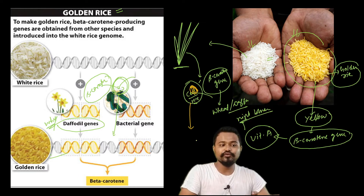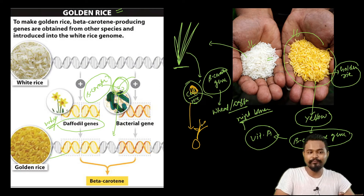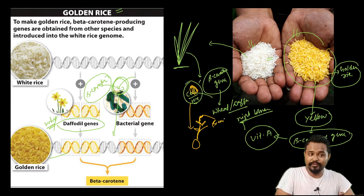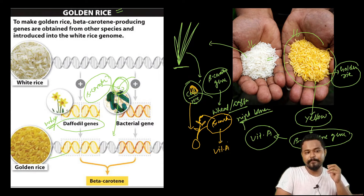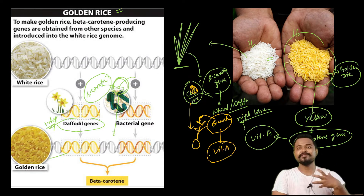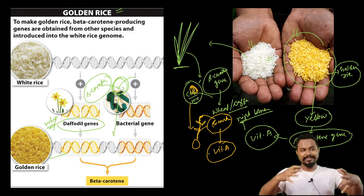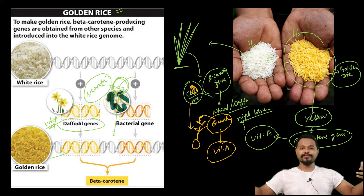If you grow this cell through tissue culture, you will grow a new cell. This produces beta-carotene in the rice, which acts as a vitamin A precursor. This process helps us develop golden rice.